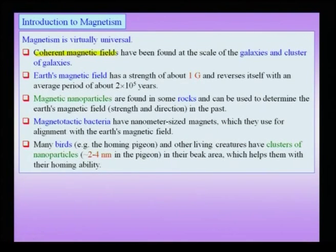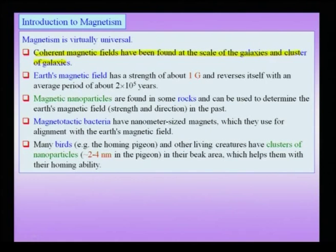We will also see that the spin arrangement in certain magnetic nanostructures can be very different from that of bulk structures. If I say that magnetism is universal, this would not be an understatement. Coherent magnetic fields have been found at the scale of galaxies and clusters of galaxies. The origin of this is not fully understood yet, and there is still a lot of work being done in this area.